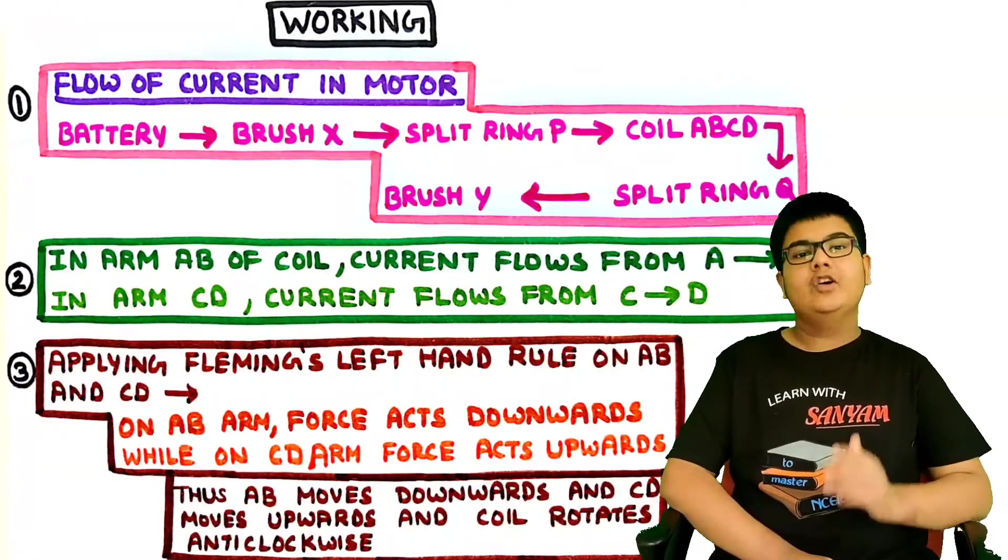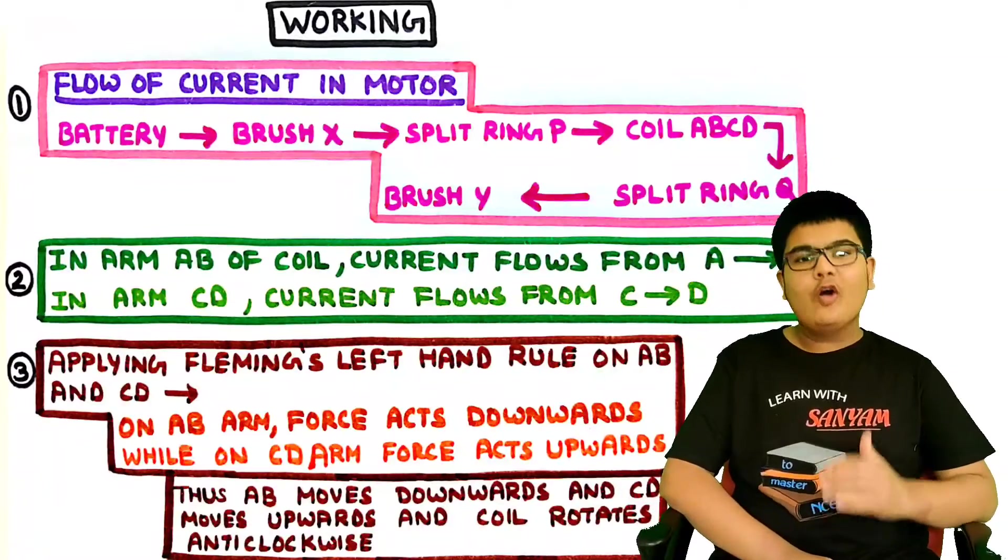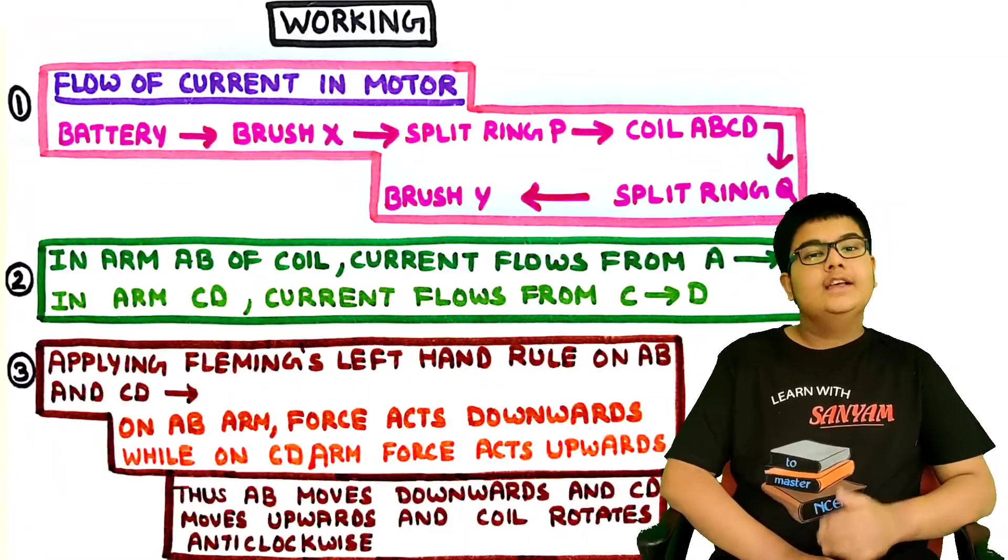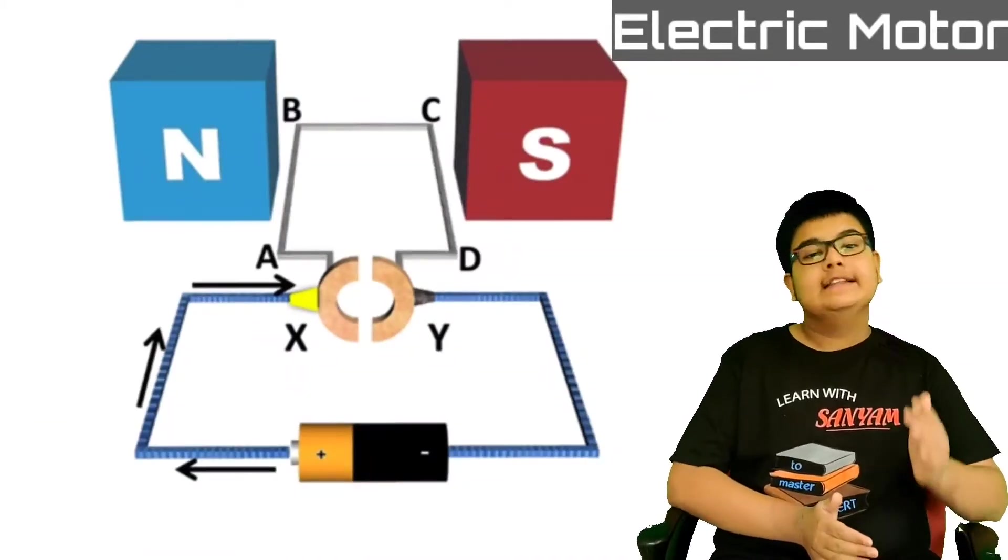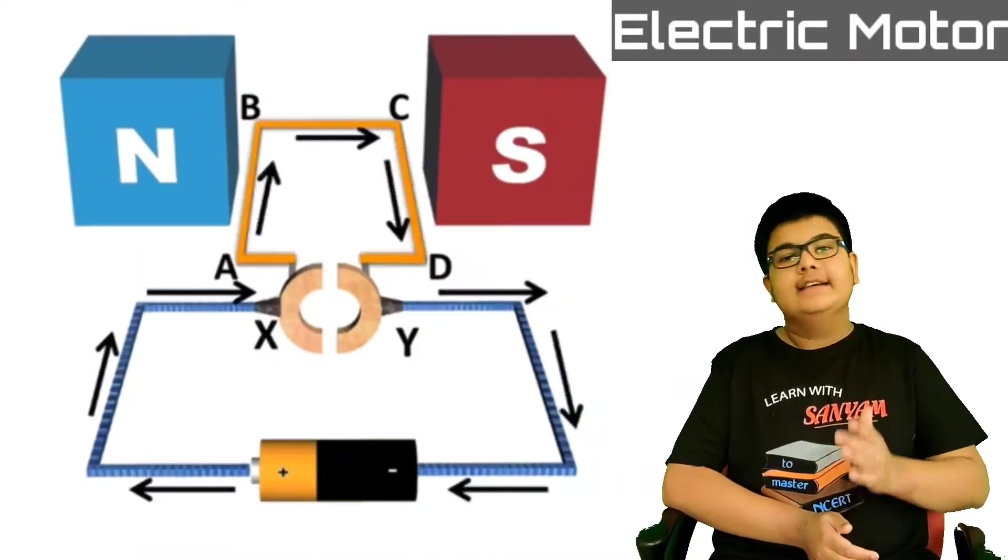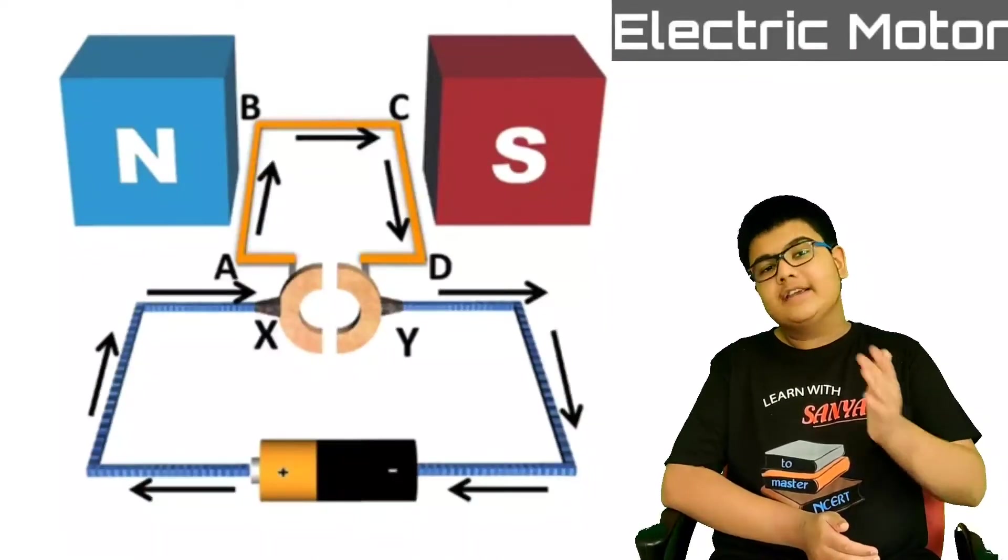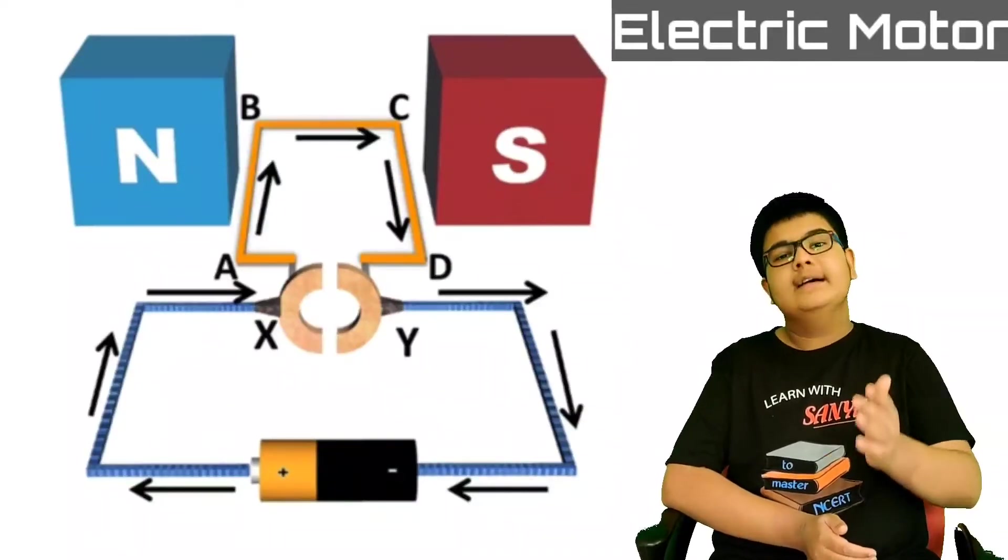Let's understand the working of electric motor. For this first let's see the flow of current in a motor. Current flows from a battery to the brush X, then to the split ring P, then to the coil ABCD, then to the split ring Q, and finally to the brush Y. And finally it goes back into the battery.